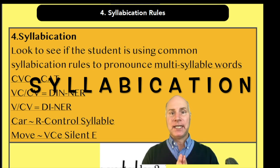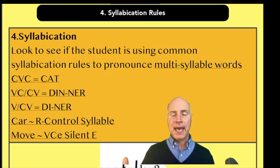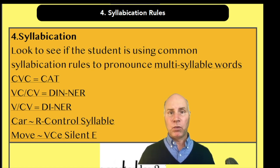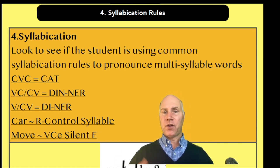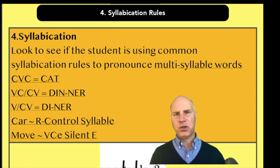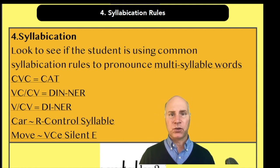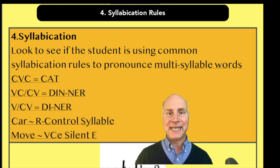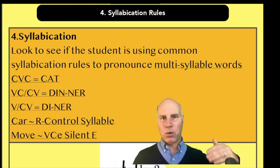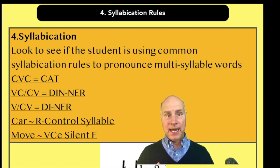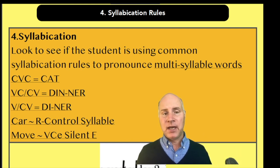Syllabication involves taking a multi-syllable word and breaking it into syllables. This is a harder skill for students, and you could probably see these mistakes on almost any open-response oral reading fluency assessment because it's one of the more advanced skills. It's common that a student is going to have difficulty with some of this stuff.